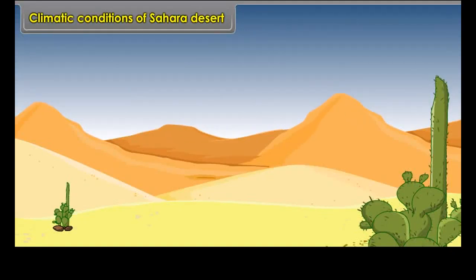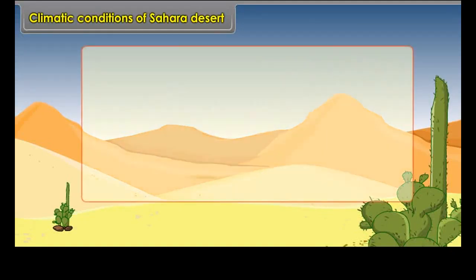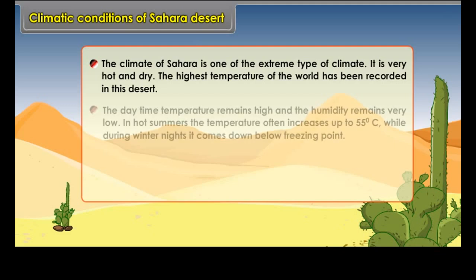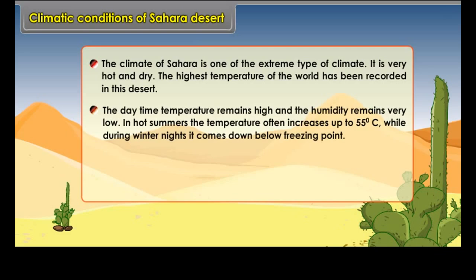The climate of the Sahara is one of the most extreme types of climate. It is very hot and dry. The highest temperature in the world has been recorded in this desert. The daytime temperature remains high and humidity remains very low. In hot summers, the temperature often increases up to 55 degrees Celsius, while during winter nights it comes down below freezing point.